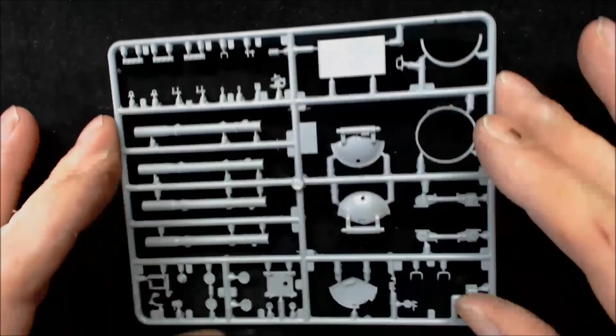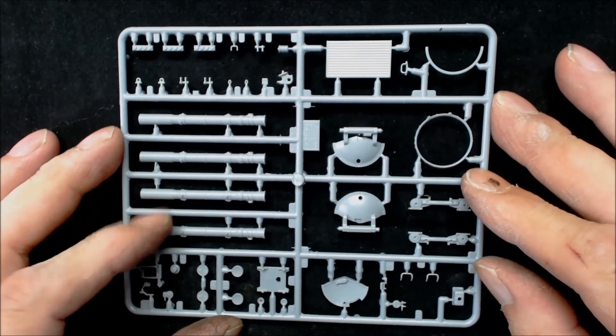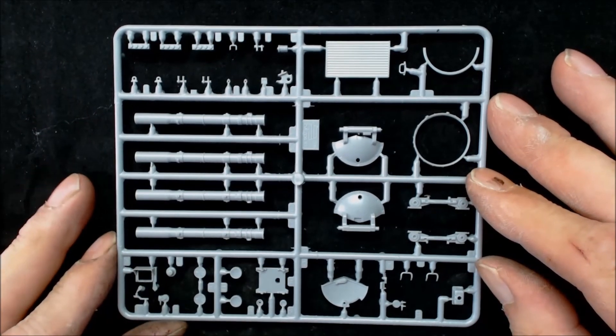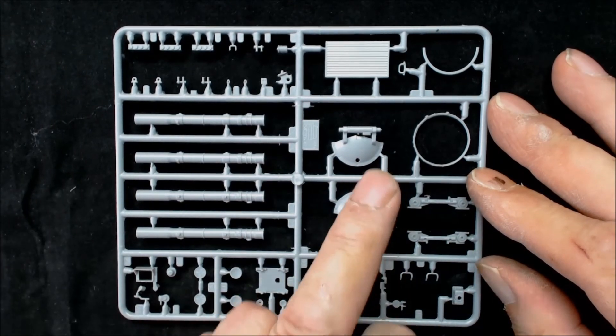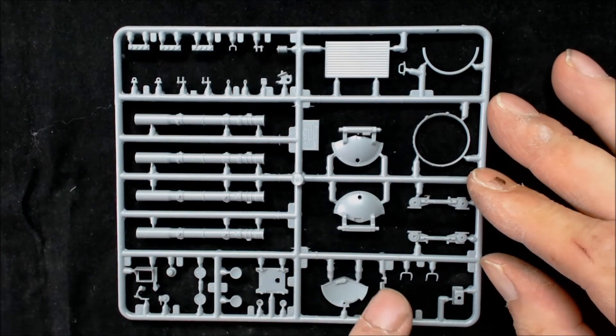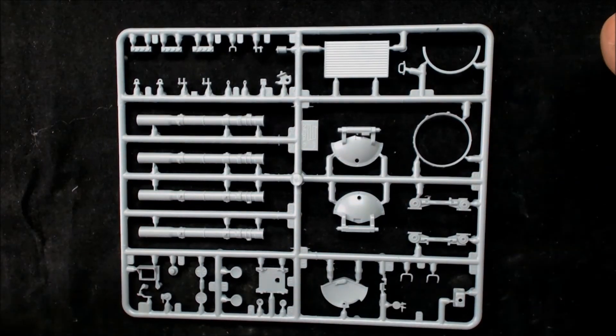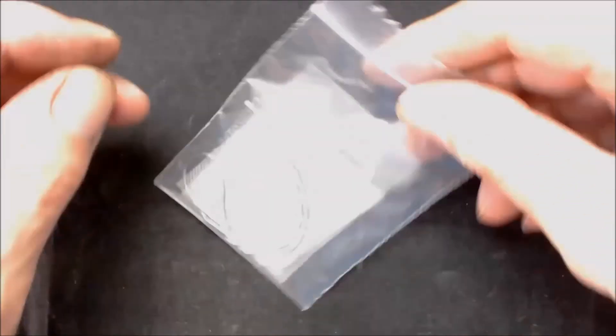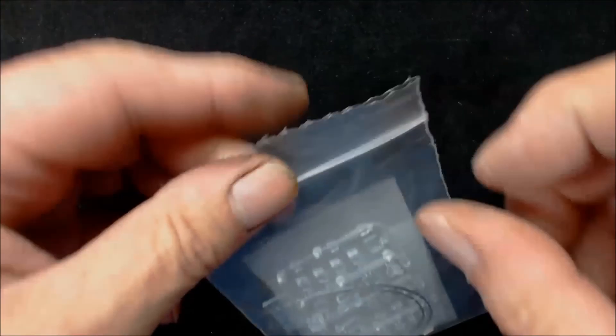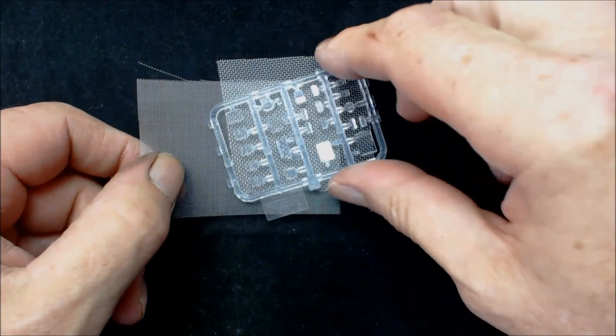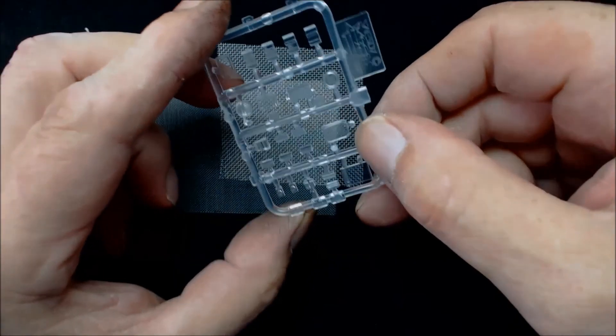There's two of these sprues so we'll only bother looking at one of them. These are the rocket holders, a couple of hatches. The detailing is nice, nice and clean, no flash. What more could you ask for? That's the end of the sprues and all we've got left now - there isn't any decals or transfers or stickers with this, there's nothing at all.